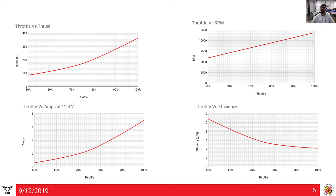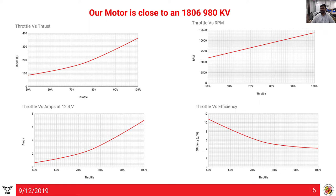From these numbers, dividing maximum RPM by the voltage applied gives about 980 KV. So our motor is close to an off-the-shelf 1806, 980 KV motor. Note that 980 KV motors at 1806 don't exist off the shelf — Parrot made this specifically for efficiency and battery life, which is why the Bebop gives you about 20–25 minutes of flight time.